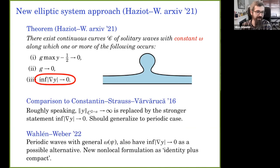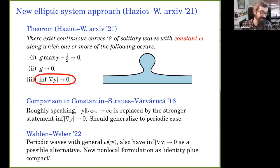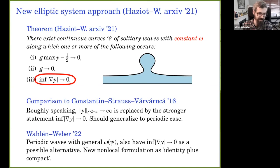Comparing with prior results: roughly speaking, we're replacing a blow-up alternative in the relatively strong Hölder space C^{2+α} with this last condition — the infimum of |∂conformal map| going to zero — which is a much stronger statement. This argument and these statements can likely be generalized to the periodic case. Indeed, Eric Wahlen and York Weber in a recent preprint, using quite different techniques and allowing general vorticity, also have this as one of their alternatives.